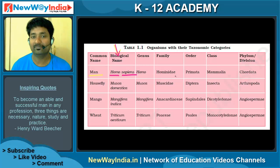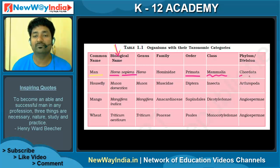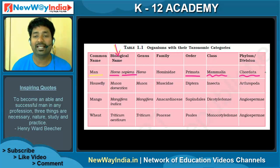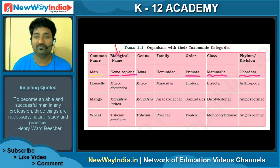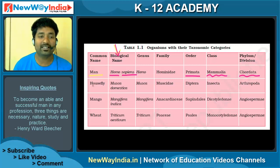The family of man is Hominidae, order is Primata, class is Mammalia, phylum is Chordata, and kingdom is Animalia — because we are animals. Kingdom Animalia is not always listed separately here, but that is what it is. The same way, let's look at house fly.